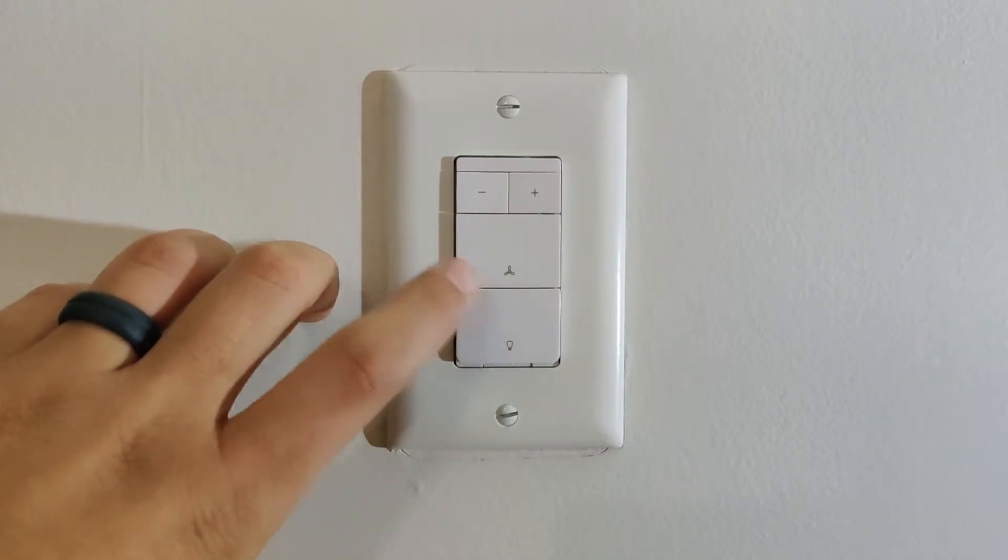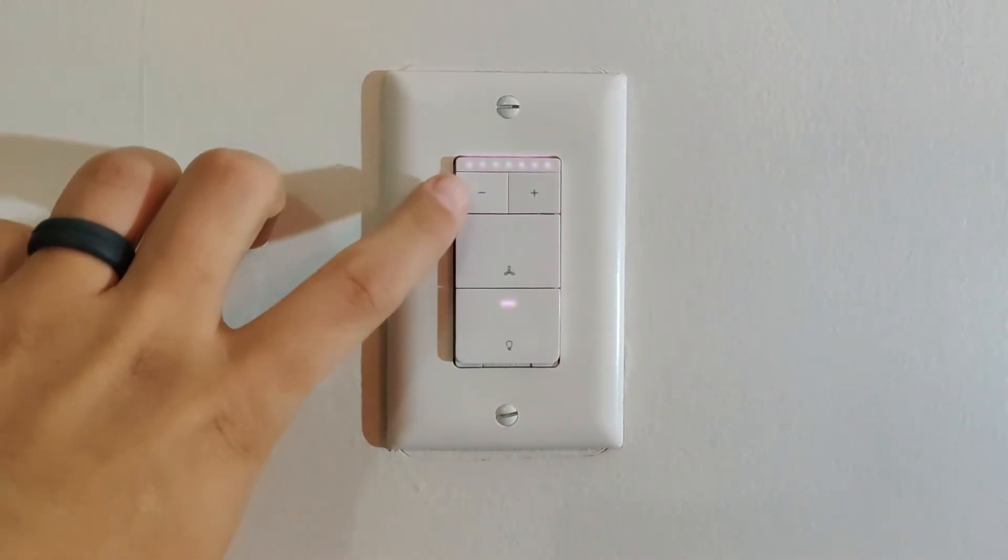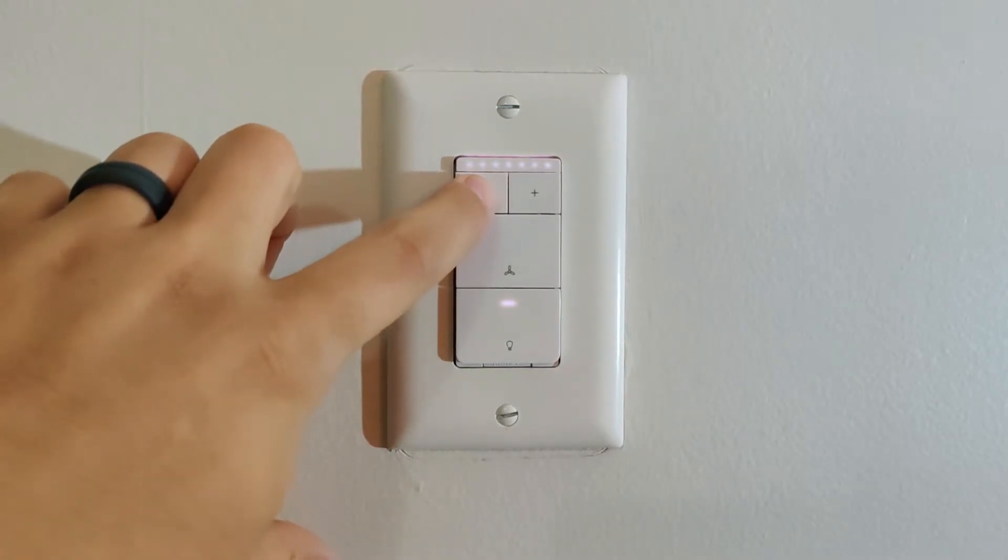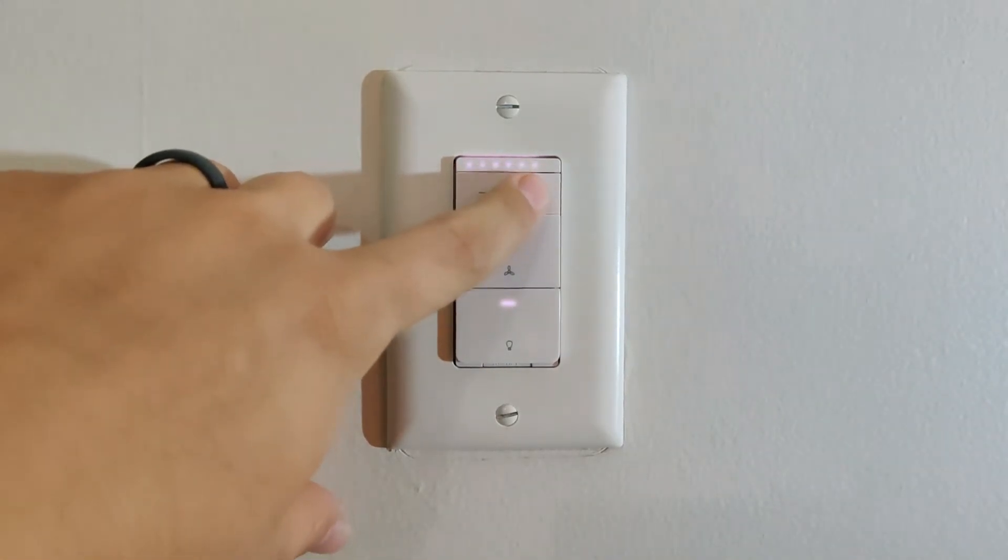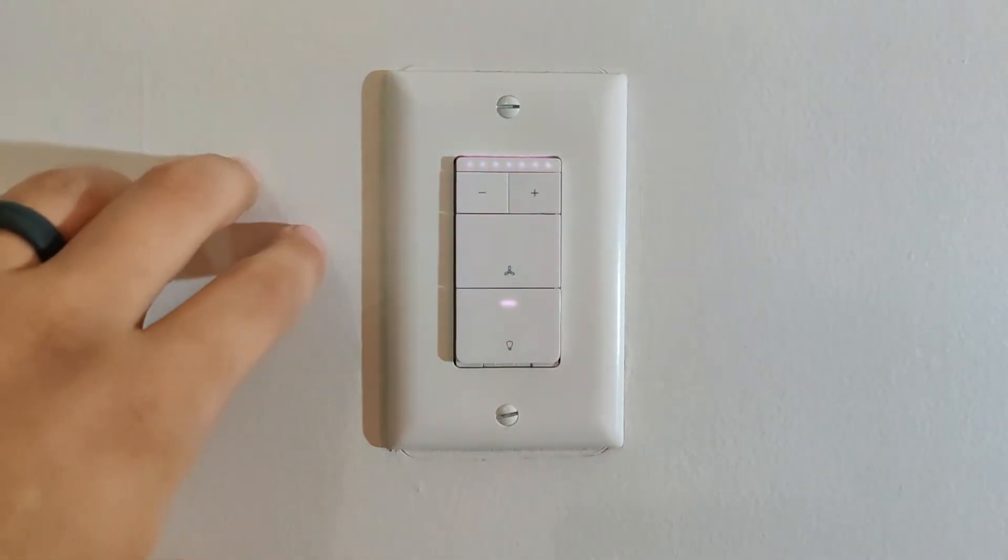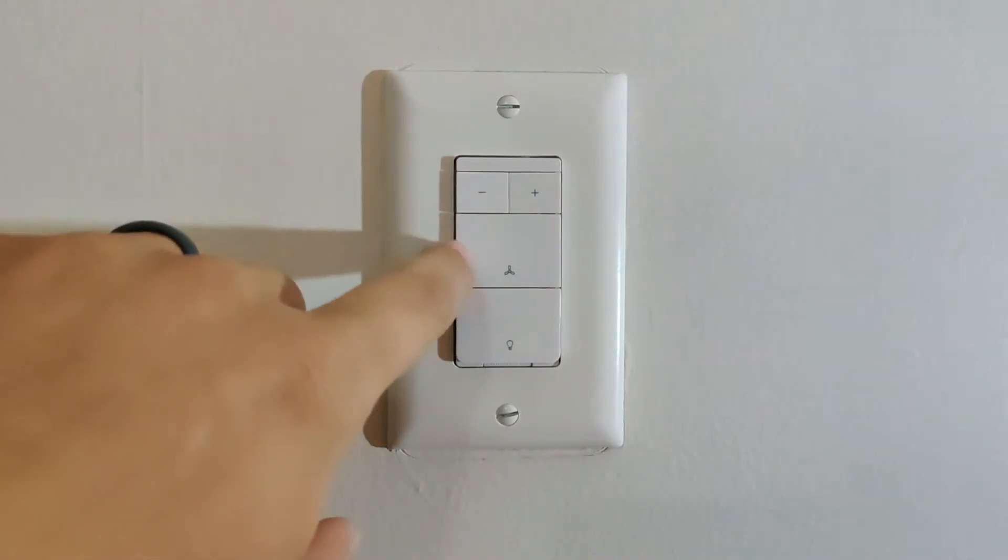When either the fan or the light are on by themselves, the plus and minus buttons are used to adjust either the speed of the fan or the brightness of the light. While the light has 14 settings for different brightness levels, the fan has 4 settings for different speeds.